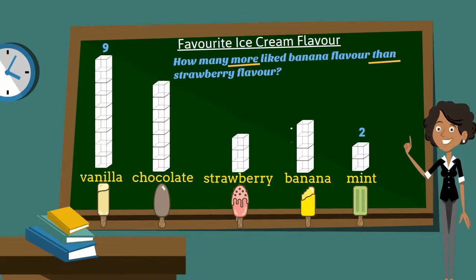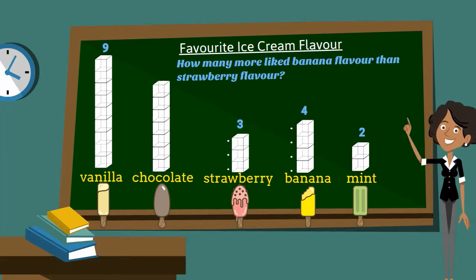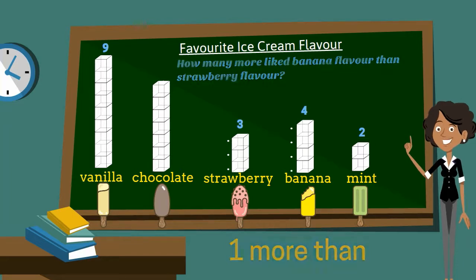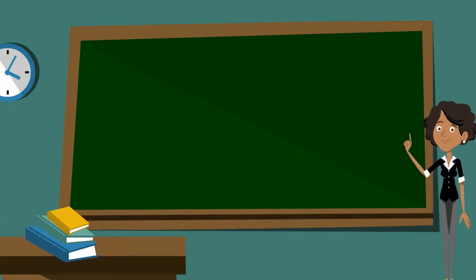One, two, three, four. Then I'll go to my strawberry column and count how many cubes: one, two, three. Four cubes take away three cubes equals one. So banana has got one more like than strawberry.